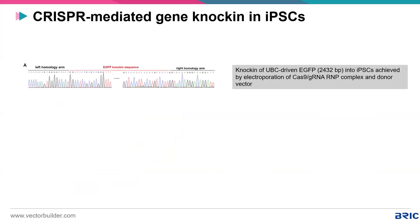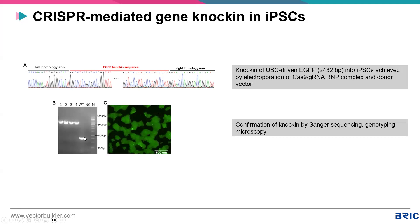Here is an example using the RNP system to knock in EGFP into iPSCs. A Cas9 and gRNA RNP complex was used along with a donor vector containing GFP. Sanger sequencing confirmed the EGFP sequence is present and knock-in was successful, also verified by genotyping. The wild-type band is around 800 bp, the EGFP insertion adds about 2,400 bp, so successful knock-in appears at approximately 3,200 bp — which is observed. GFP expression was also confirmed.